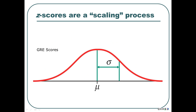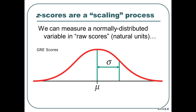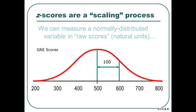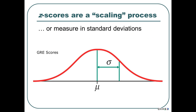Z-scores are just a scaling process — a process of changing the scale of measurement. Old GRE scores were measured with a mean of 500 and a standard deviation of 100. So one standard deviation up is 600, two is 700, three is 800. Real variables have a minimum and maximum — the GRE went from 200 to 800, so if someone tells you they got a 50, they might not know what they're talking about.